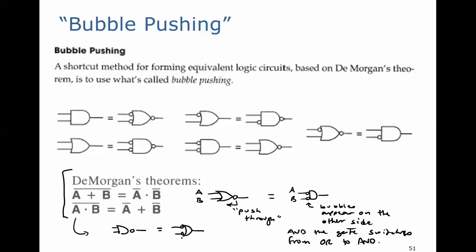All right, so once again, if we take these two bubbles here on the input side and push them through the gate, the bubble shows up at the output right here, and the gate changes from an OR to an AND.